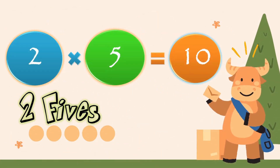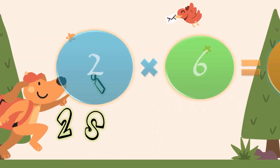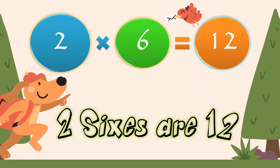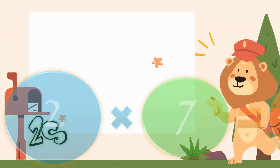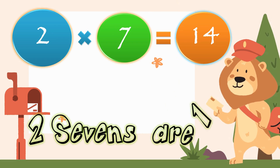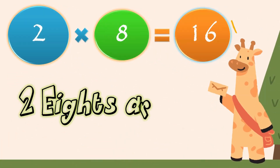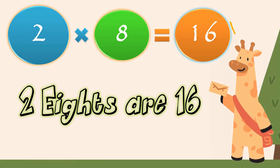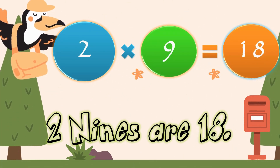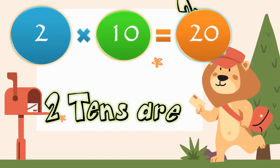Two fives are ten. Two sixes are twelve. Two sevens are fourteen. Two eights are sixteen. Two nines are eighteen. Two tens are twenty.